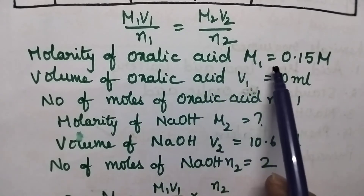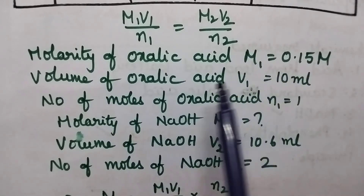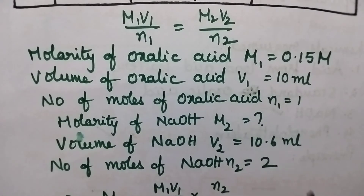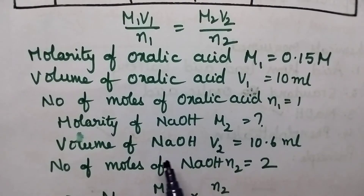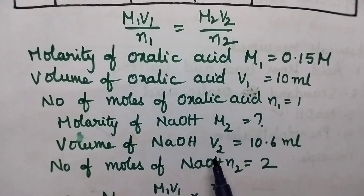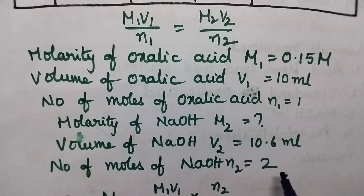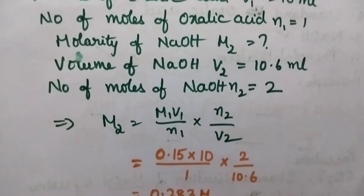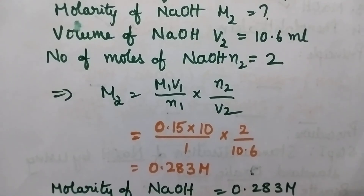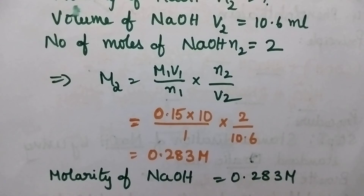Molarity of oxalic acid M₁ is equal to 0.15 molar. Volume of oxalic acid V₁ is equal to 10 ml. Number of moles of oxalic acid N₁ is equal to 1. Molarity of NaOH M₂ is to be found. Volume of NaOH V₂ is equal to 10.6 ml. Number of moles of NaOH N₂ is equal to 2. M₂ can be determined using the expression M₂ = (M₁V₁/N₁) × (N₂/V₂). On substituting the values, the molarity of NaOH is obtained as 0.283 molar.